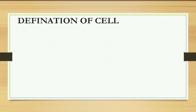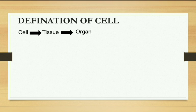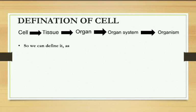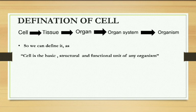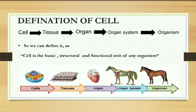Definition of cell. As we know from class 6, many cells are combined together to form tissue. Tissues are combined to form organs, organs form organ systems, and later it becomes the organism. So we can define it as: cell is the basic structural and functional unit of any organism. We can show: cell → tissue → organ → organ system → organism.